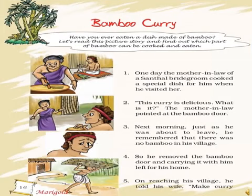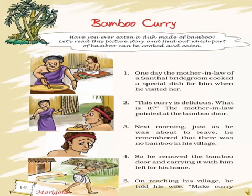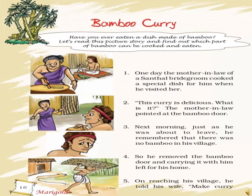Bamboo Curry. One day, the mother-in-law of a Santhal bridegroom cooked a special dish for him when he visited her. He found it so delicious and asked, "This curry is so delicious. What is it?" The mother-in-law pointed at the bamboo door. So when he asked her what it was made of, she didn't say anything — she just pointed at the bamboo door which was made out of bamboo.